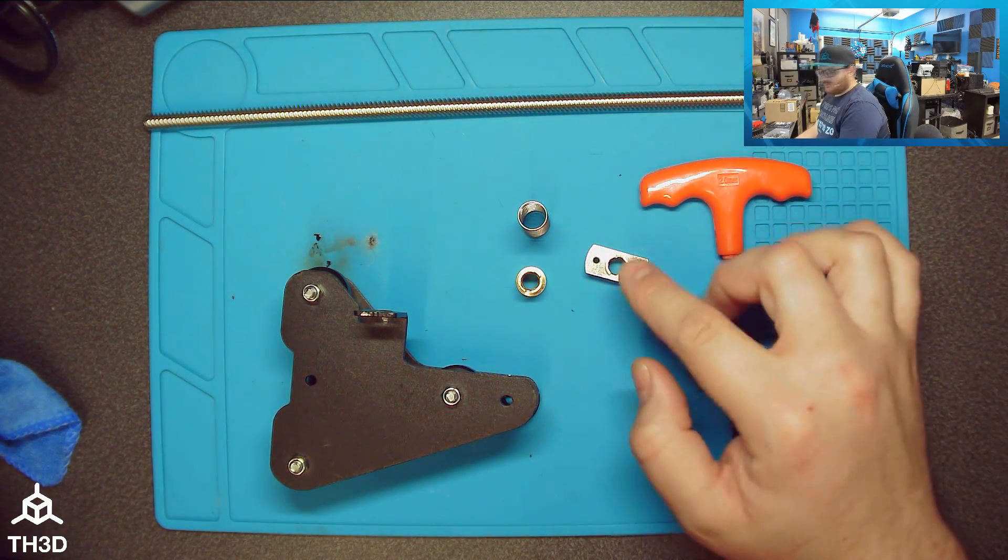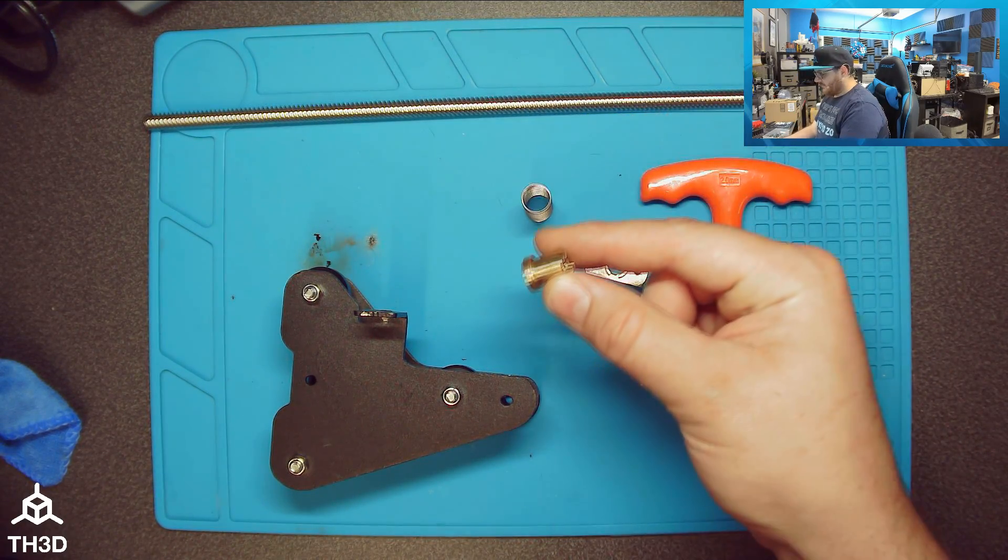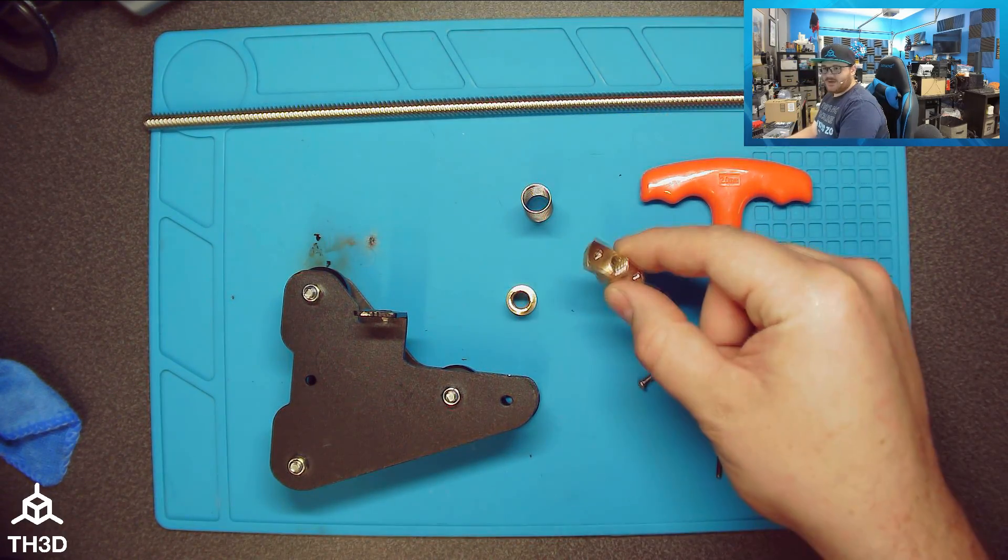So we have three parts to the new lead screw nut. We have this tension spring, the bottom portion, and the top portion.